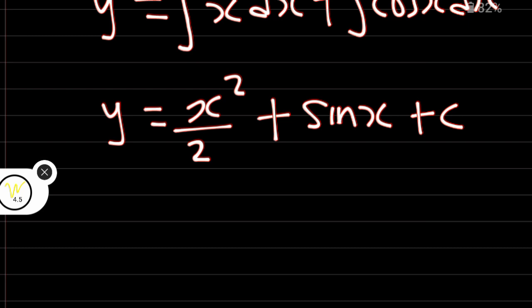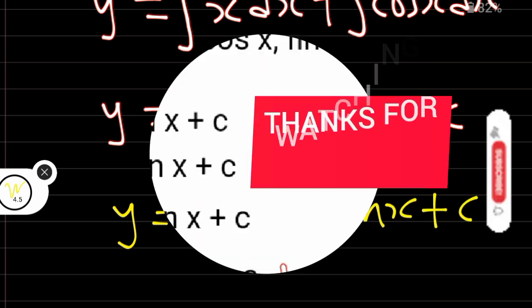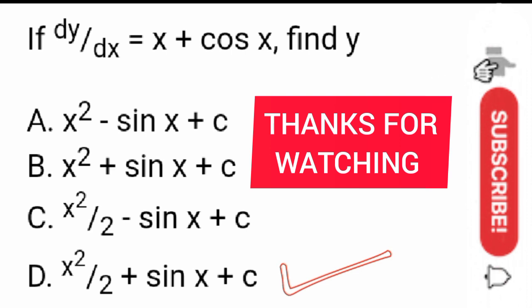Y is equal to x squared over 2 plus sin x plus c. Option D is the correct answer. Thanks for watching.